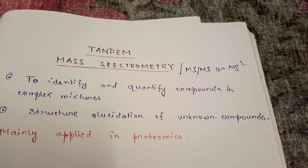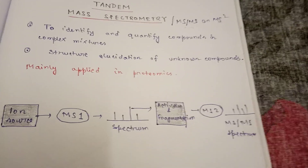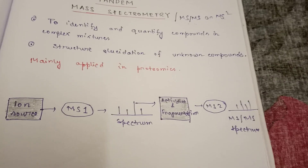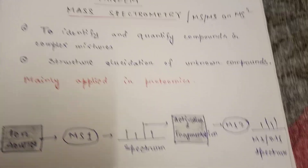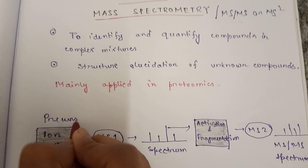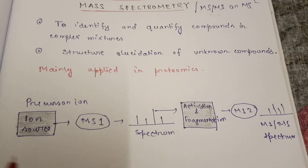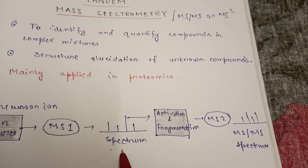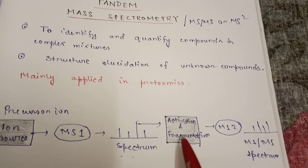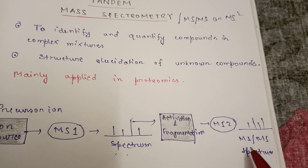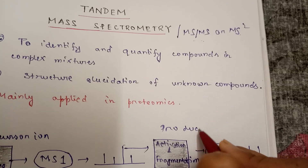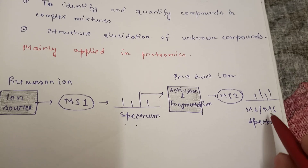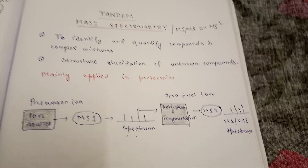Now let's see the general structure. There are three steps of any mass spectrometry: the first step is ionization, next is mass analyzer, and then detector. There is an ion source, so this is called the precursor ion. There will be one ion source, then mass spectrometry number one will be performed on it and we'll have a spectrum. Now we'll take just one peak, and again the mass spectrometry will happen — this is MS2. And this time it is called product ion. Then mass spectrometry will again perform and we'll have the MSMS spectrum. So this is the general structure of tandem mass spectrometry.